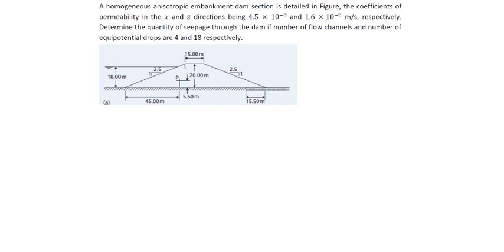Here, seepage discharge equals square root of kx into kz, because it is anisotropic soil, into h into nf by nd.